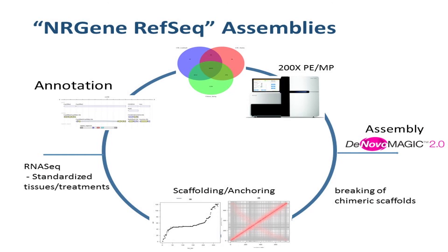I'll walk you through how we're doing the NRGene RefSeq assemblies. We're basically generating 200X paired-end and mate-pair data, assembling that using NRGene's DeNovo Magic software, then applying bioinformatics steps to break chimeric scaffolds that tend to creep into assemblies. We're anchoring and scaffolding using Hi-C data, and supporting annotations of these assemblies using standardized tissues and treatments to conduct RNA-seq analyses so we have confidence in our annotations.